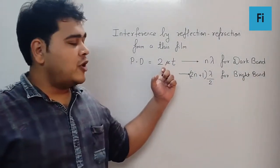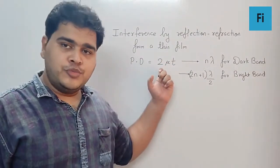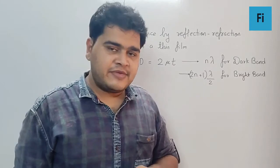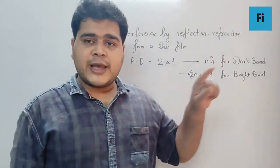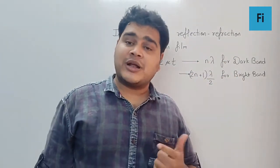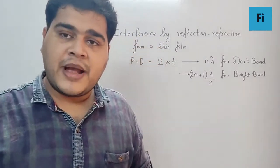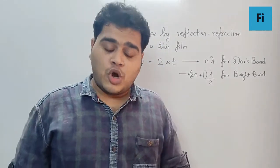What you need to understand is that for the path difference equal to 2μt, that's a geometry that you would derive. But here we get the exact opposite consideration or conditions for the bright and dark band.